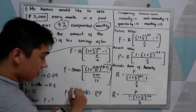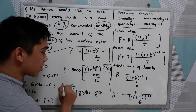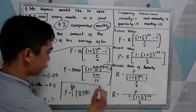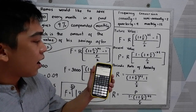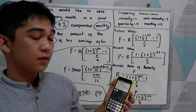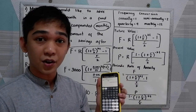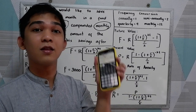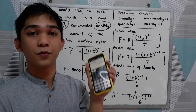After inserting the given in our calculator, we have 18,340.89. Don't forget the unit — we have Peso. If you don't have a calculator, you can install it on your mobile phone.